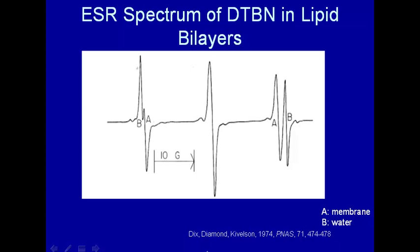This is the ESR spectrum of di-tertiary butyl nitroxide in lipid bilayers, and maybe you could see that this is a superimposition of two three-line spectra. Okay, so here's, let me make this a little bigger, three-line spectra, three-line spectra, but they're shifted a little bit.